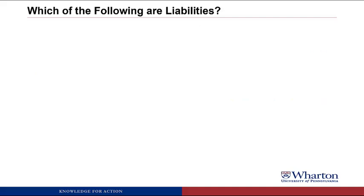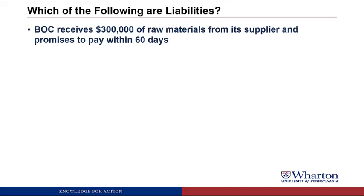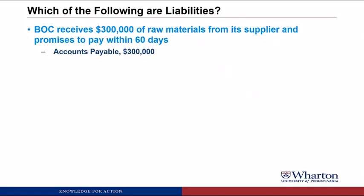We're going to do the same exercise now with liabilities. First item: BOC receives $300,000 of raw materials from a supplier and promises to pay within 60 days. This will be a liability called accounts payable — the term used any time we owe money to a supplier. It meets the first criteria because we received the benefit of raw materials in a transaction, creating an obligation to pay our supplier. The amount is reasonably certain at $300,000 per the invoice.